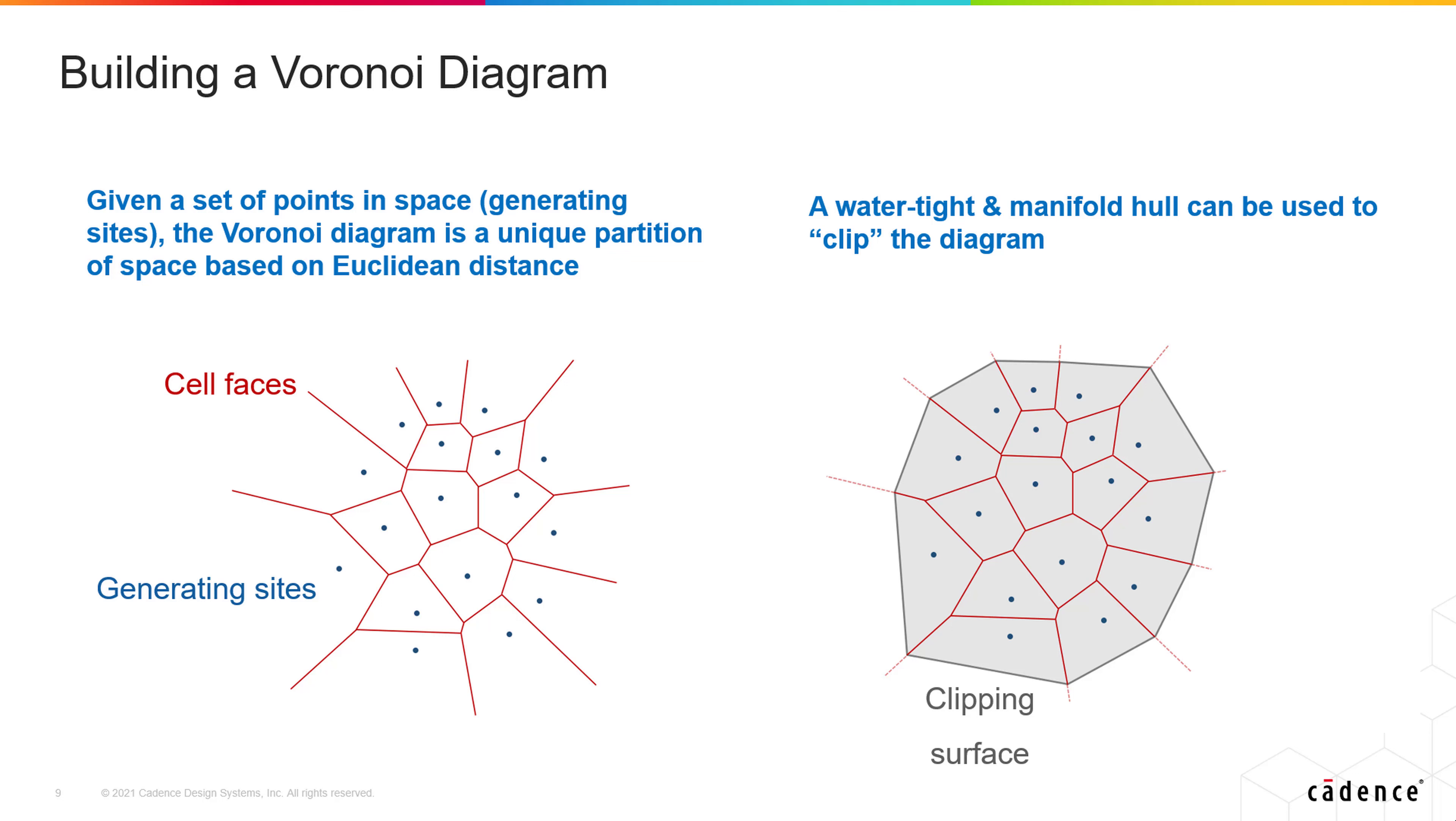There are two important advantages to the Voronoi diagram. First, there is no convexity constraint. The clipping surface can be of arbitrary shape. In addition, the clipping diagram and the Voronoi diagram length scales are independent.